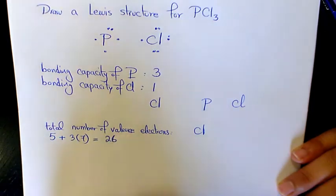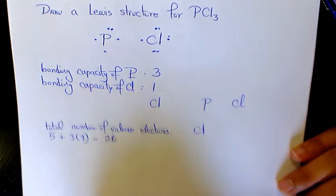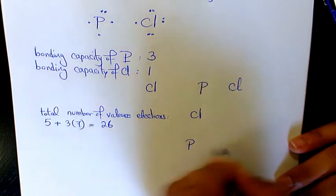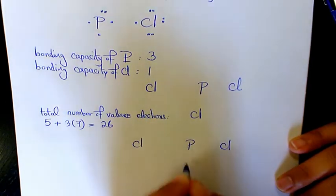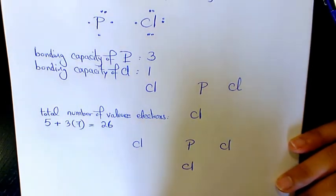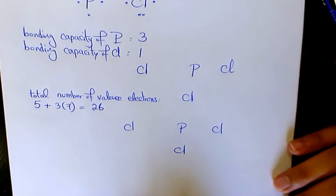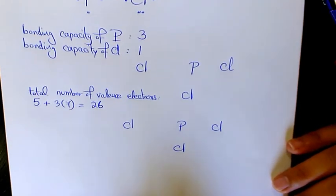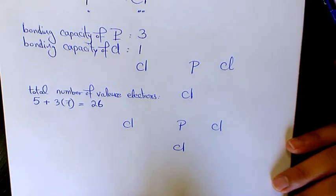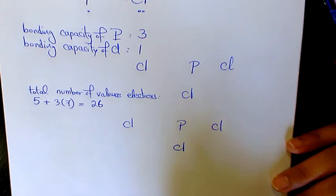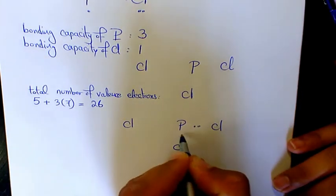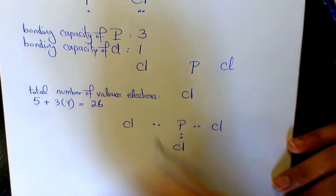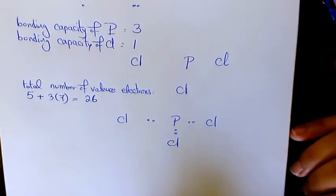Then what we need to do is place a pair of electrons between each adjacent pair of atoms. Every two of those dots represents a bonding electron pair that forms a single covalent bond — so one-two, one-two, one-two — that's the pair of electrons placed between each adjacent pair of atoms.